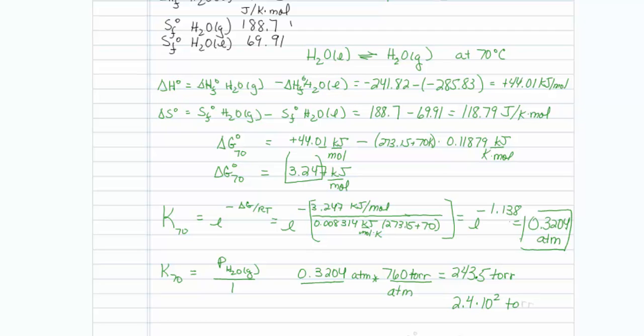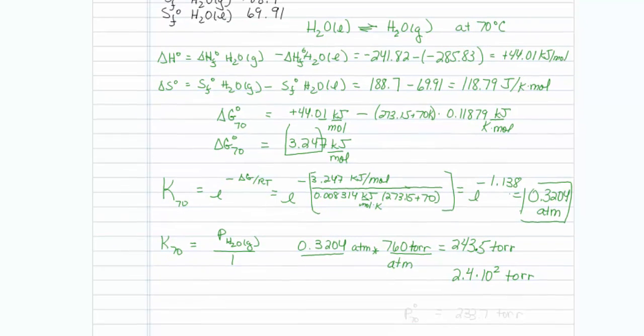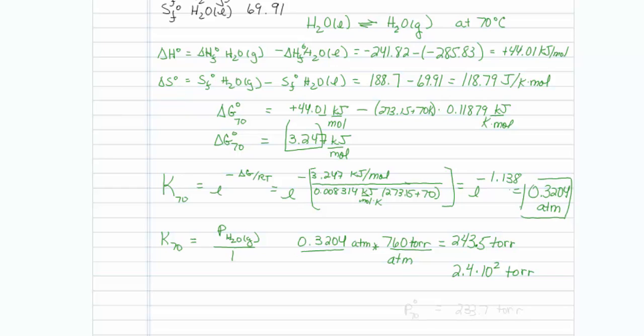And I actually went to the trouble to look up the real vapor pressure of water at 70 degrees Celsius, and it turns out that it is 233.7 torr. So we're not perfectly accurate with this method, but we're within the ballpark.